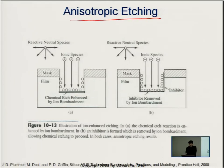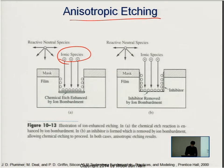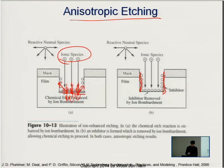For anisotropic etching, depending on your gas selection, ions bombard vertically — some particles are reflected, forming residue films on the side wall. Since the vertical bottom is kept being removed by physical bombardment, regardless of whether residue films form on the side wall, you can keep etching in one direction.